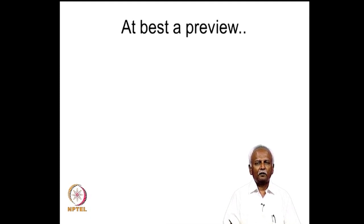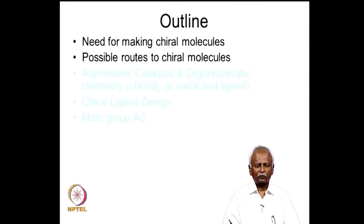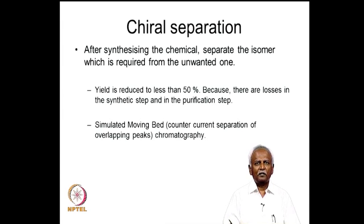This lecture is at best a preview — we are not going to be able to cover all the topics, but we will give you a peek into this important subject. Let us go to the possible routes for making chiral molecules. The first one, of course, is to make the molecule as a racemic mixture and then separate or remove the unwanted isomer.